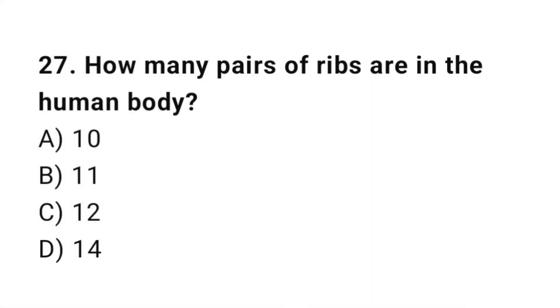Question number 27: How many pairs of ribs are in the human body? The correct answer is C. 12.